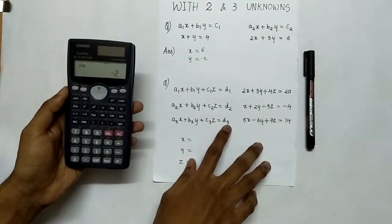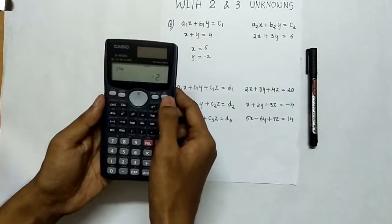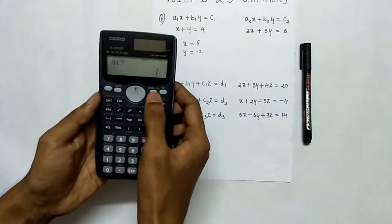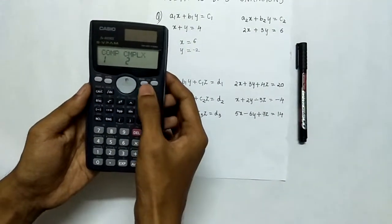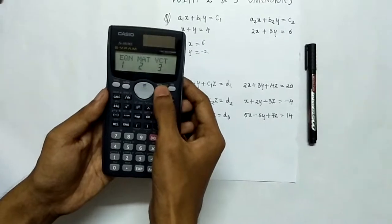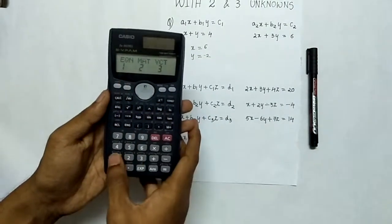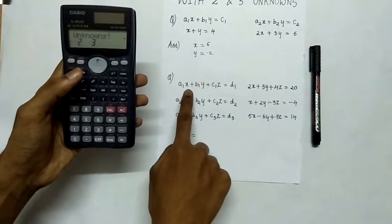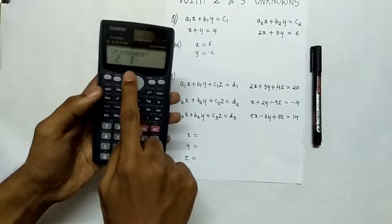Let us see how to solve this using the calculator. Switch it on again, select the mode again to equation by pressing the mode button 3 times, select eqn. This time we have 3 unknowns x, y and z, select 3.